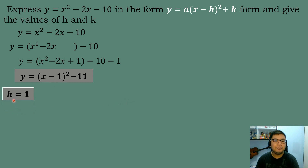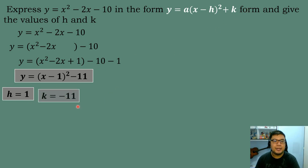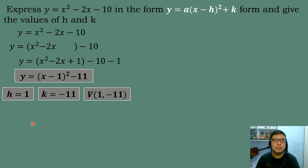The value of h is positive 1. Since we have x minus h, and the value inside is negative 1, we change the sign, so h = 1. The value of k is simply that constant, so k = −11. Our vertex is at (1, −11).